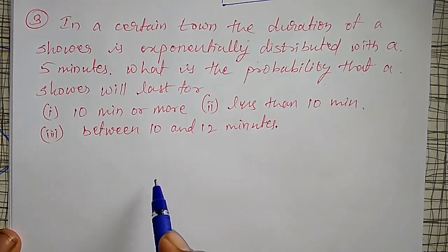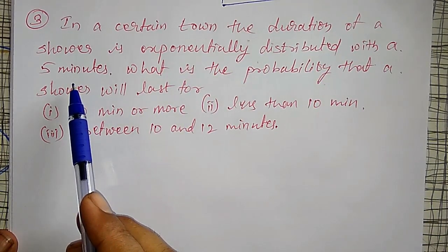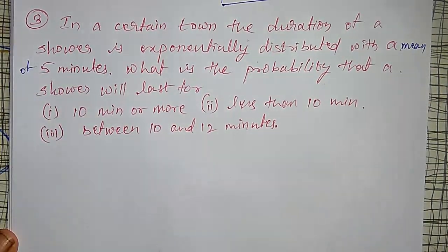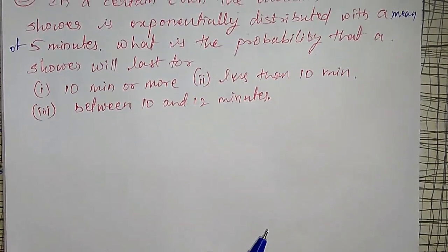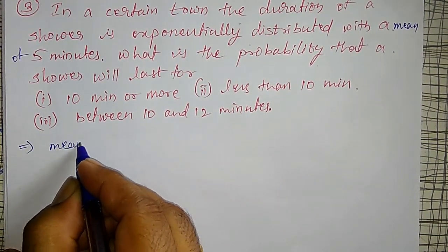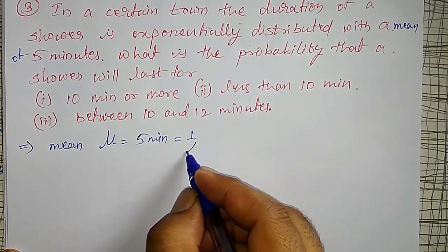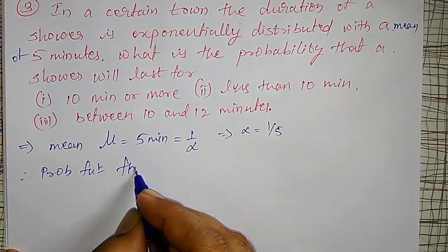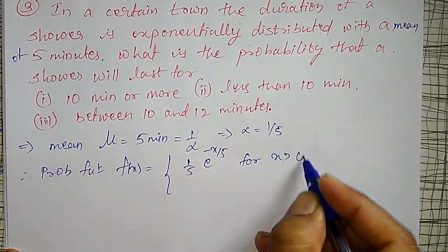Another example on exponential distribution: in a certain town, the duration of a shower is exponentially distributed with a mean of 5 minutes. What is the probability that a shower will last for 10 minutes or more, less than 10 minutes, and between 10 to 12 minutes? Given mean μ = 5 minutes, so α = 1/5, and f(x) = (1/5) · e^(−x/5) for x > 0 and 0 otherwise.